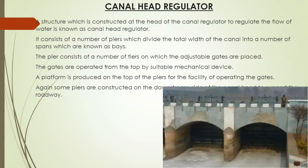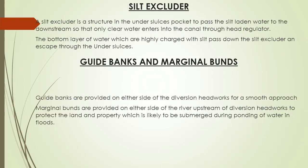The canal head regulator is a structure constructed at the head of the canal to regulate the flow of water. It consists of a number of piers which divide the total width of the canal into a number of spans known as bays. The piers consist of a number of tiers on which adjustable gates are placed. The gates are operated from the top by a suitable mechanical device, and a platform is provided on top of the piers for operating the gates. Additional piers on the downstream side support the roadway. The silt excluder is a structure in the under sluices pocket to pass silt-laden water to the downstream so that only clear water enters the canal through the head regulator. The bottom layers of water, which are highly charged with silt, pass down the silt excluder and escape through the under sluices.